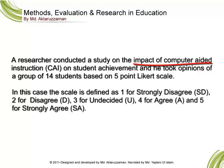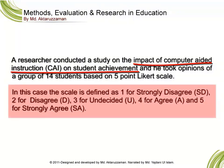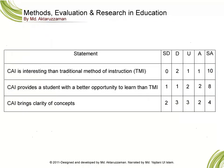Let's go through an example. A researcher conducted a study on the impact of computer-aided instruction (CAI) on student achievement, and he took opinions of a group of 14 students based on a 5-point Likert scale. The scale is defined as: 1 for strongly disagree, 2 for disagree, 3 for undecided, 4 for agree, and 5 for strongly agree. The opinion consisted of 3 questions or statements.